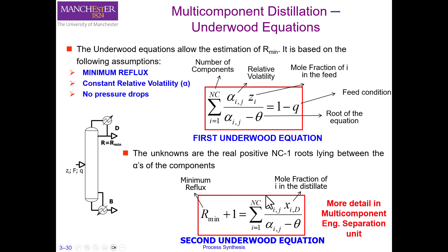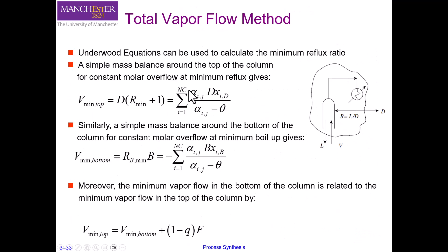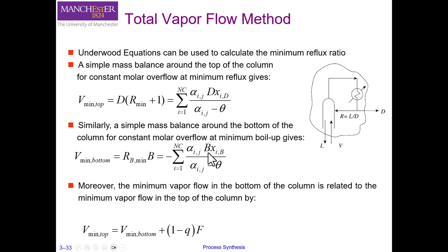The minimum vapor flow at the top equals D times (R_minimum plus 1). From the Underwood equation, R plus 1 equals this entity here, so we take this whole equation and multiply it by D. By using the Underwood equation and performing this simple mass balance at the top of the column, we can calculate the minimum vapor flow at the top. Similarly, we can do the same analysis at the bottom, where again we use the same equation but multiply it by B.